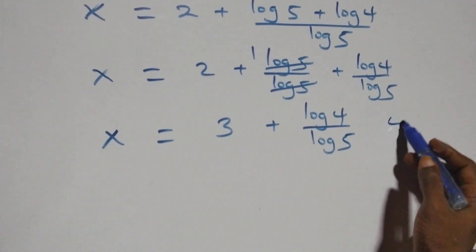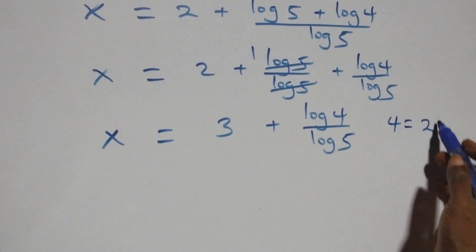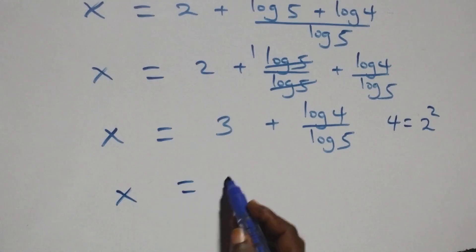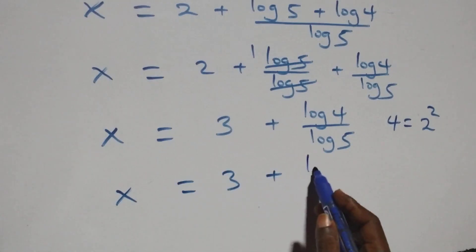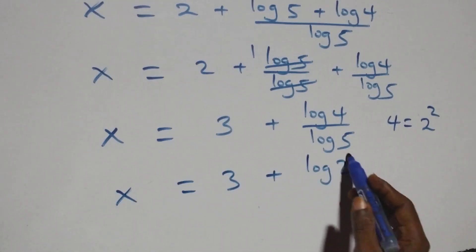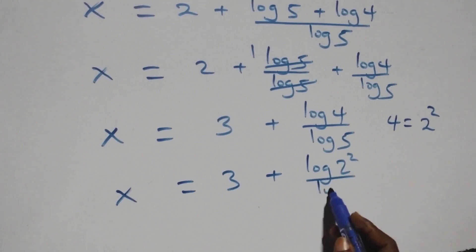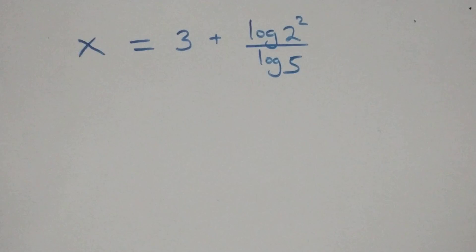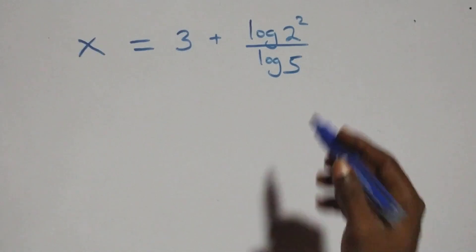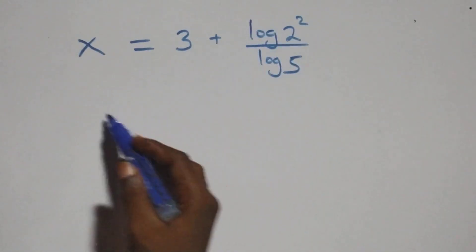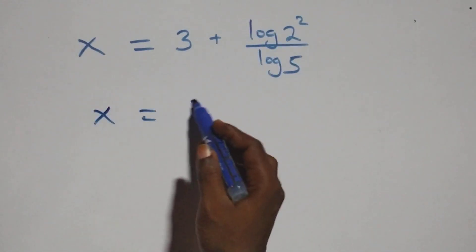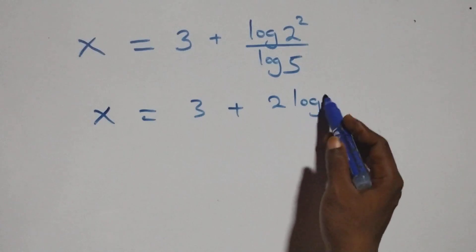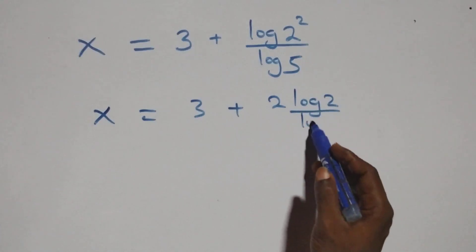Here we can express 4 as 2 times 2, which is 2 squared. So what we have becomes x equals to 3 plus log 2 squared over log 5. Then the next step: we apply the power law of logarithm, bringing the exponent down. This gives x equals to 3 plus 2 log 2 over log 5.